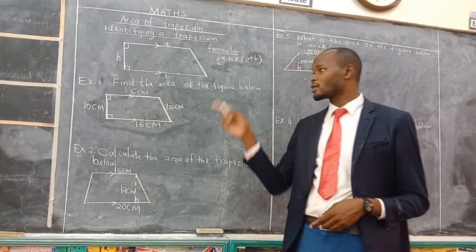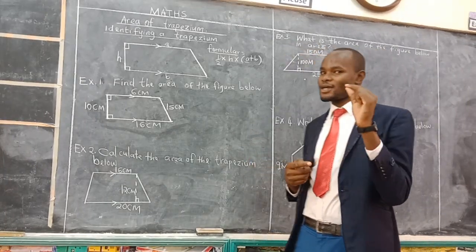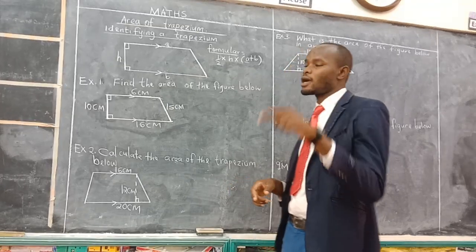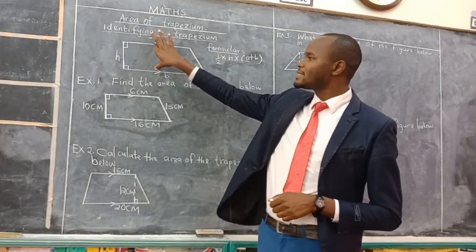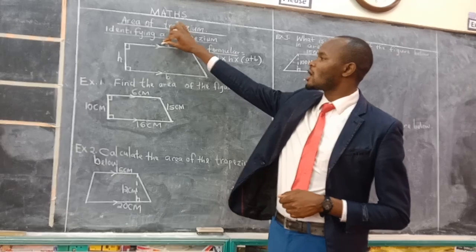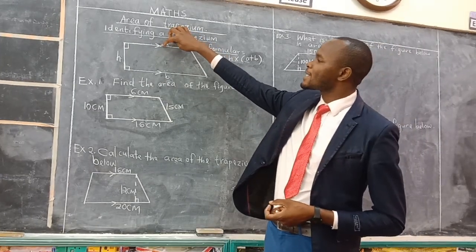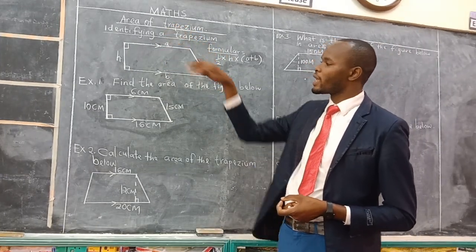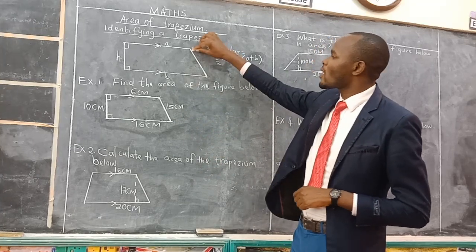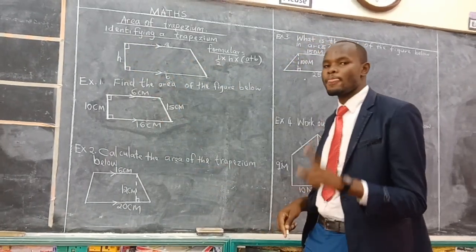What is a trapezium? Before you get the area of a trapezium, you need to identify some of its properties. First, a trapezium is a quadrilateral, meaning it has four sides — it is a four-sided figure. The other property is that a trapezium has only one pair of parallel lines. Only two lines are parallel; the other two are not parallel.